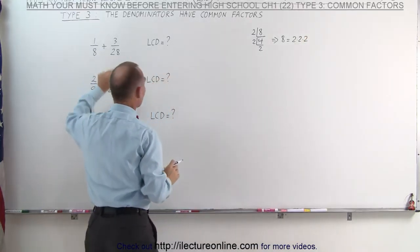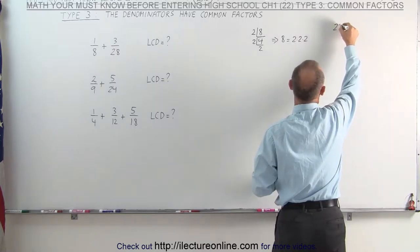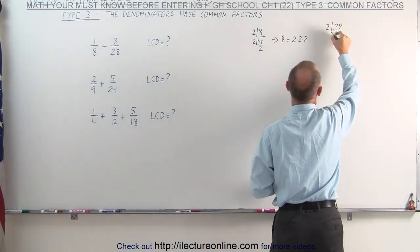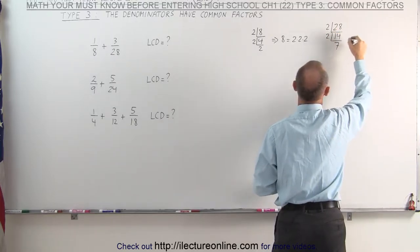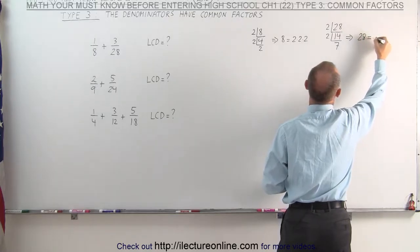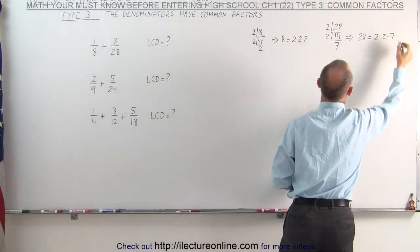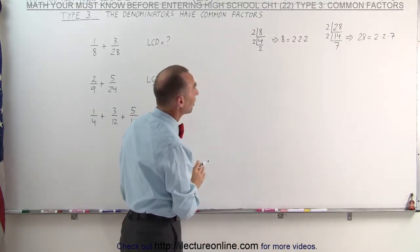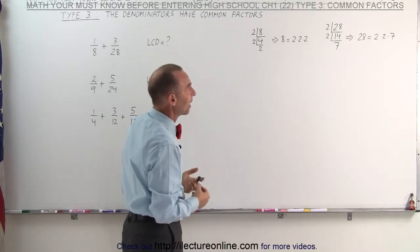We do that again with the second denominator. We take that denominator, we divide it by the lowest prime number, 2, which gives us 14. Since it's still even, we can divide it by 2, which gives us 7. 7 being a prime number tells us that 28 can be written as a product of 2 times 2 times 7. So now we've taken both of our denominators and written them as products of their prime factors.